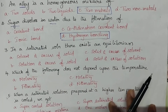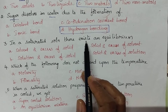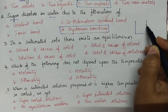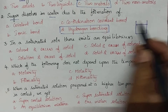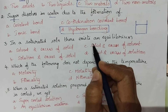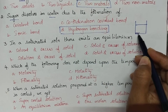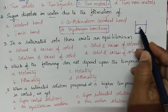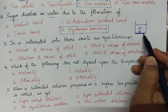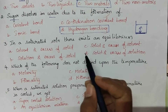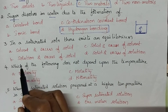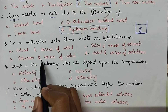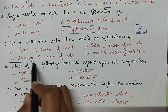In a saturated solution there exists an equilibrium. A saturated solution contains the maximum amount of solute, so excess solute will always be present. There exists an equilibrium between the excess of solute and the solution. Option B — equilibrium between solution and excess of solid — is the right option.